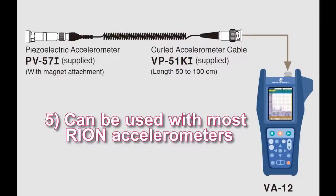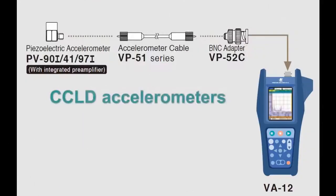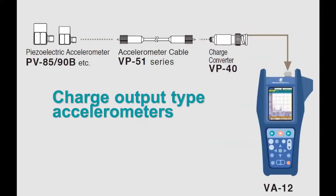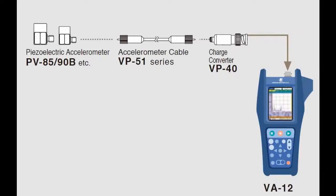Feature five: Can be used with most RION accelerometers. CC-LD accelerometers with integrated preamplifiers can be connected using a BNC adapter. Charge output type accelerometers can be connected using a VP40 charge converter.